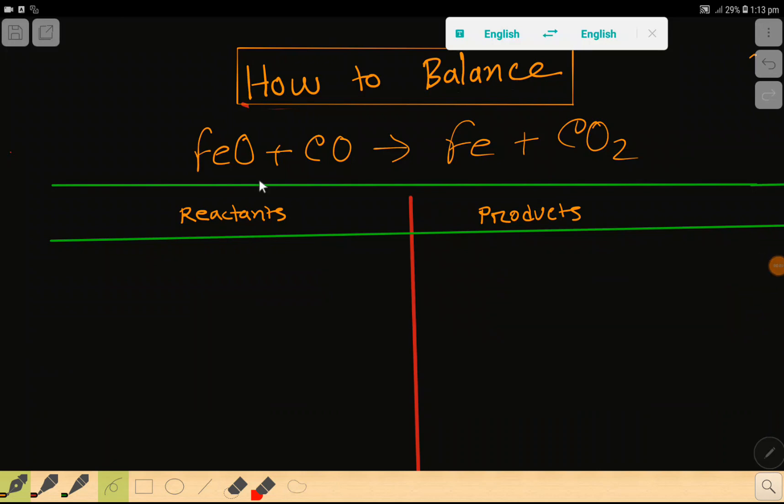Welcome to this class. Today we are going to balance this reaction. This is iron(II) oxide or ferrous oxide, this is carbon monoxide, this is iron, and this is carbon dioxide. To balance this reaction, at first we have to do a table like this. This is the reactant side and this is the product side.